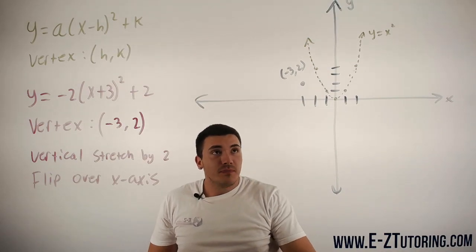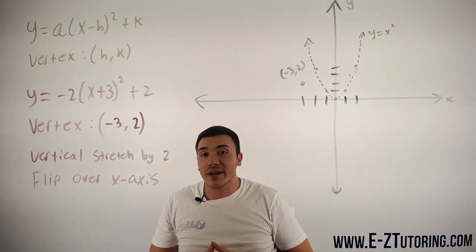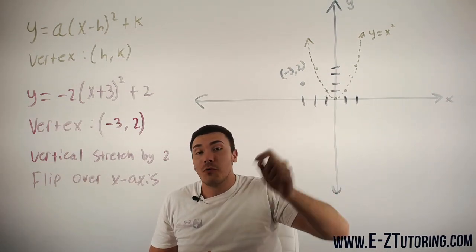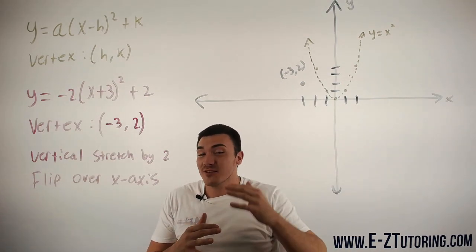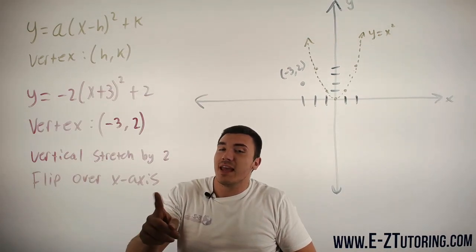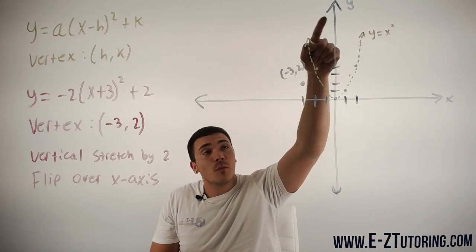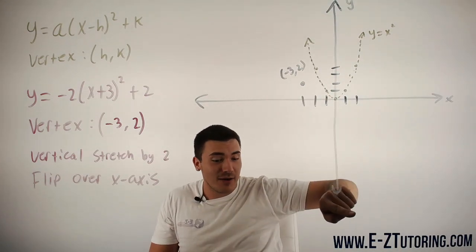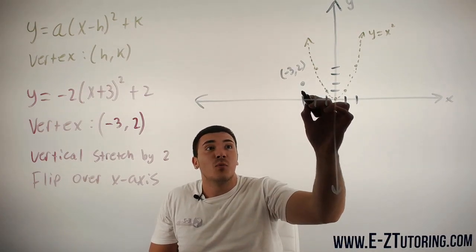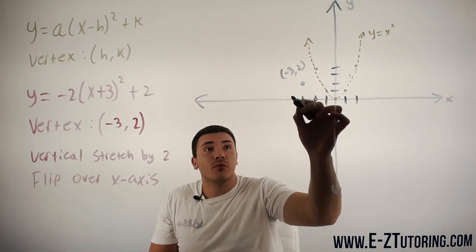So that vertical stretch by 2 means that it won't be going up 1 over 1, it now means that it will be going up 2 over 1 because we vertically stretched it by 2. Now, we are also flipping over the x-axis, so instead of going up like this, the whole parabola will be facing down. So this means that we are going to go down 2 over 1, down 2 over 1.